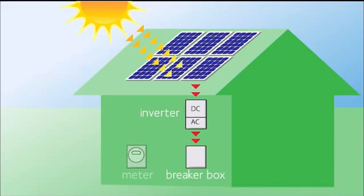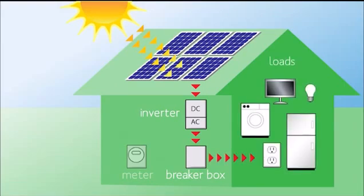From the inverter, the electricity flows into the home's existing breaker box and electric system. Solar energy powers the home in exactly the same way as electricity from the power grid, supplying all of the everyday appliances.